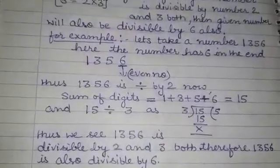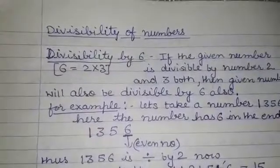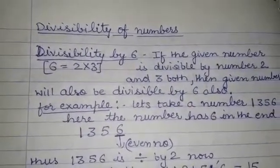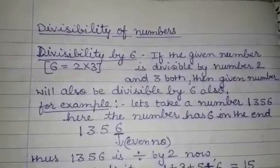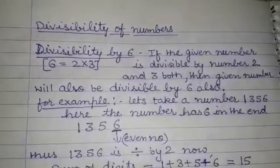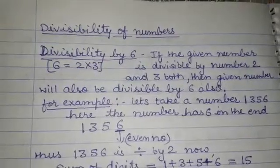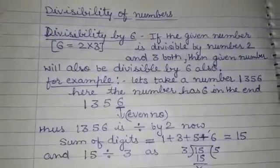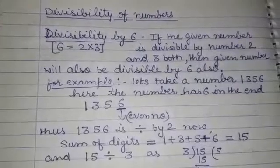So it concludes that if we want to see whether a given number is divisible by 6, then we must check that the given number is divisible by both 2 and 3. That was the divisibility rule of 6.